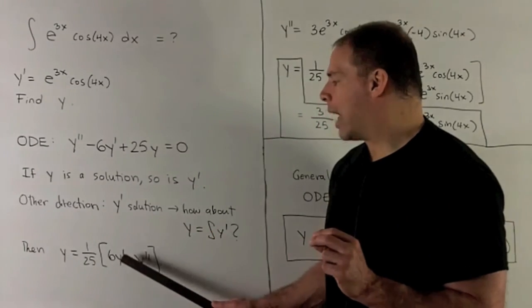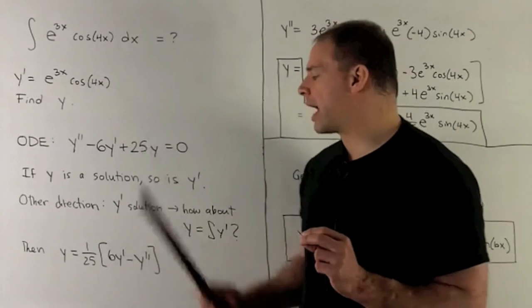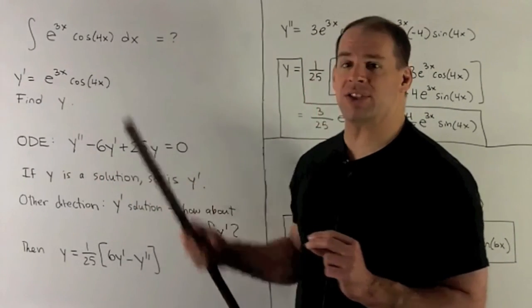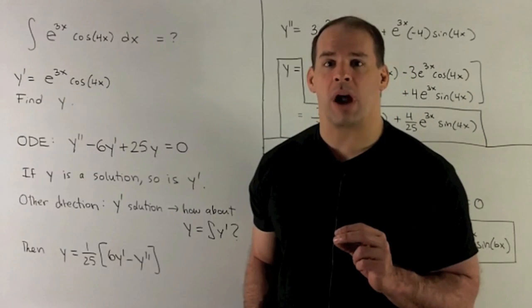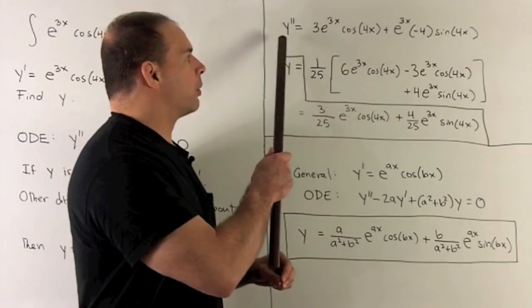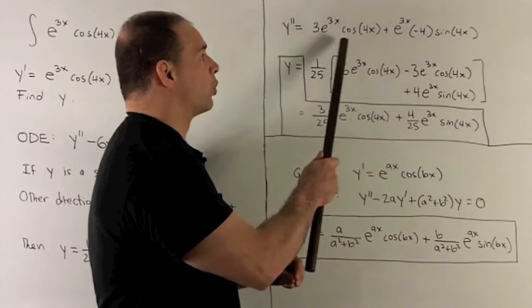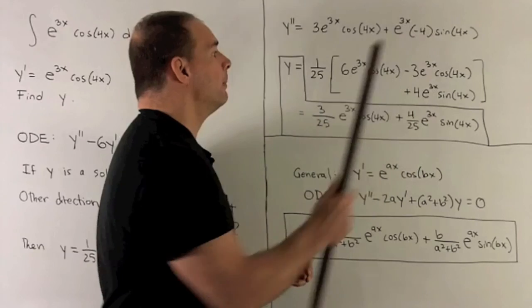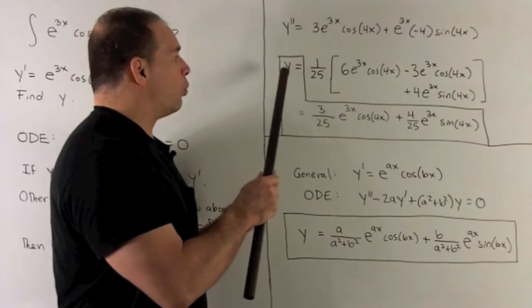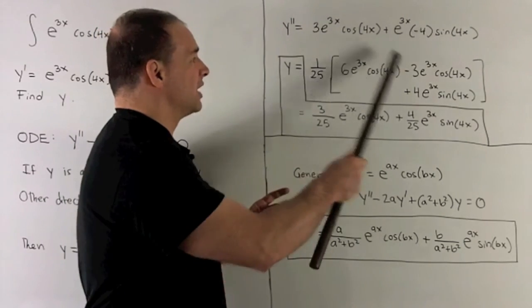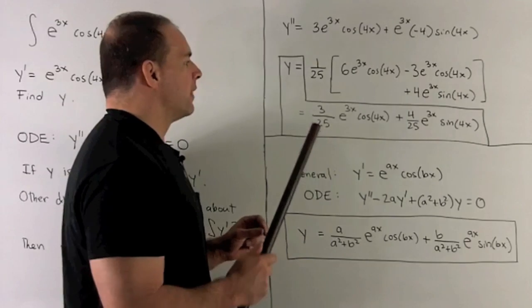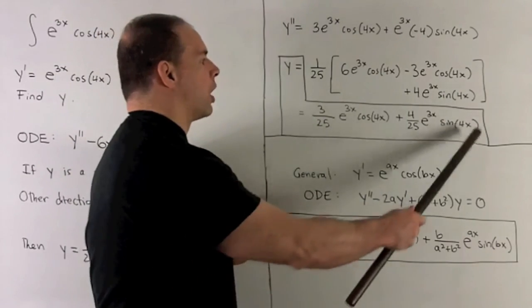We're given y prime as e to the 3x cosine 4x. And then I can get y double prime just by taking the derivative of this. So that's just going to be product rule and chain rule. If I do so, what happens? Y double prime, we just use product rule and chain rule on each term. What comes out? Well, we'll have y equal to 1 over 25, 6y prime, and then minus our y double prime. Then that collapses to our equation here.